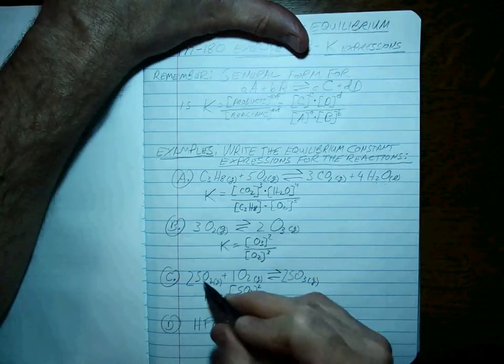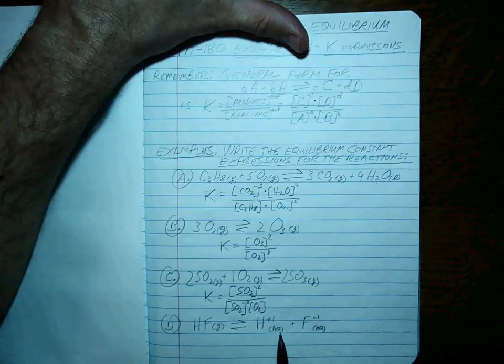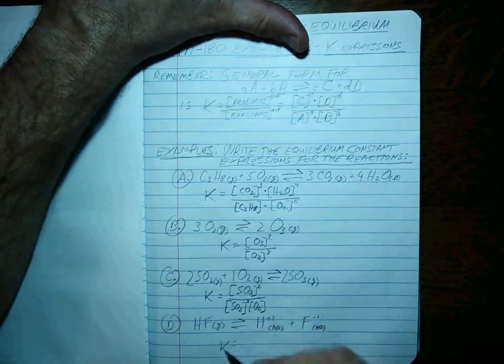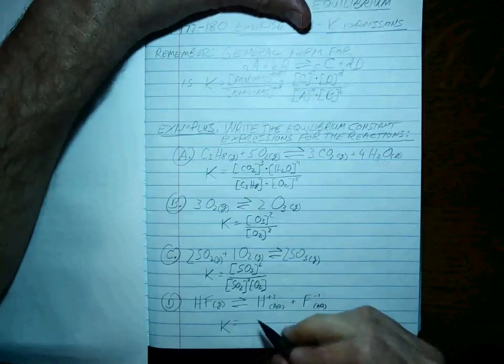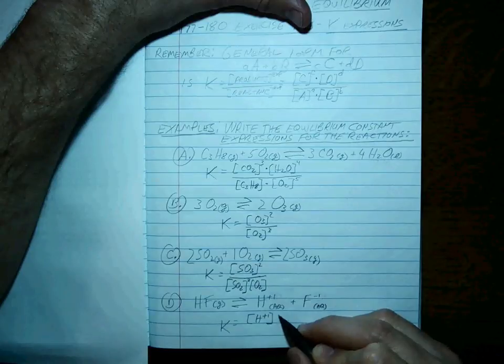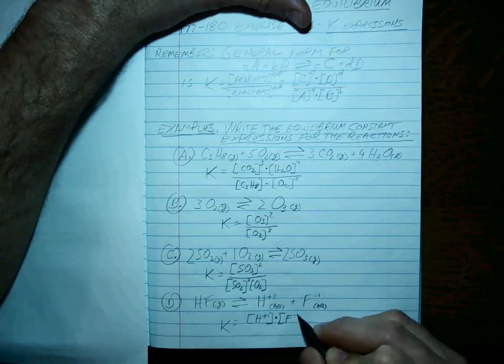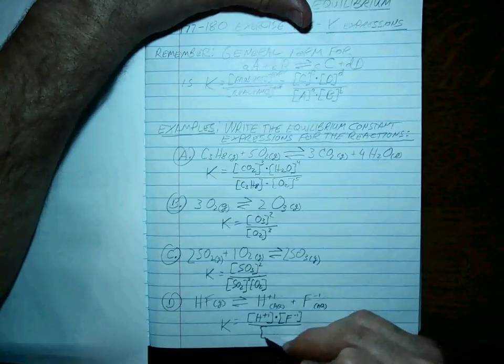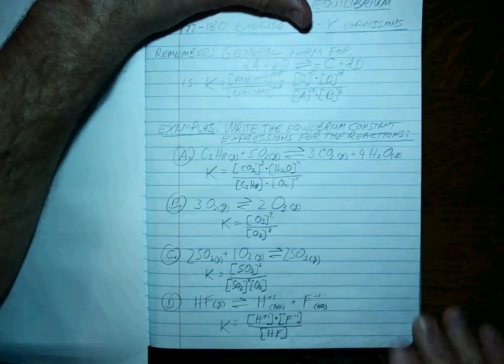O2 to the one, O2 squared. And it's also really important that you use charges on ions if they belong. So K here is equal to the products H+ times F- divided by the HF concentration.